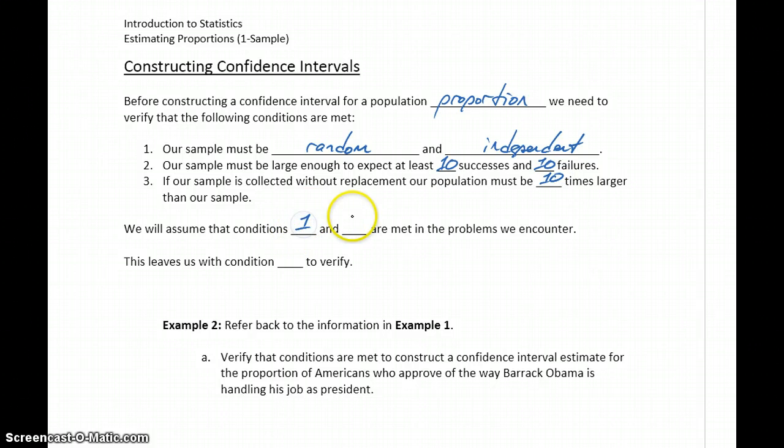As far as conditions one and three are concerned, we're going to assume that those are met since it's difficult to verify that unless we know how the experiment was conducted. For our purposes, we'll assume those are met and we're dealing with reliable data. But that leaves us with the second condition to verify.